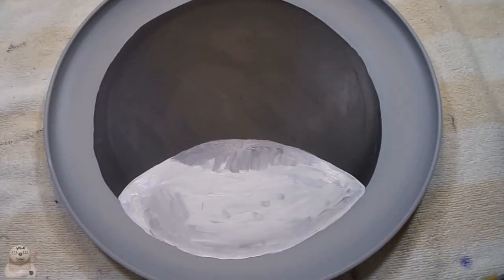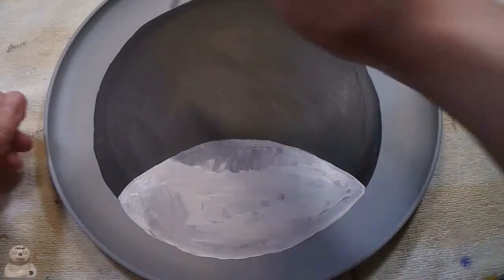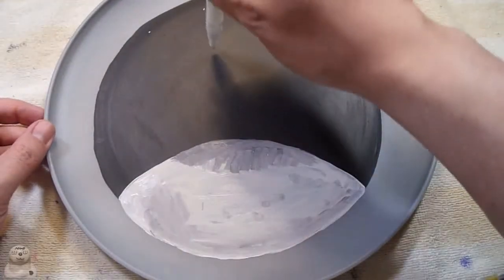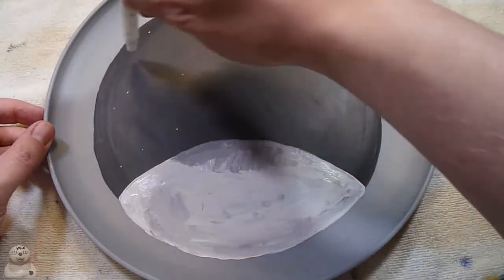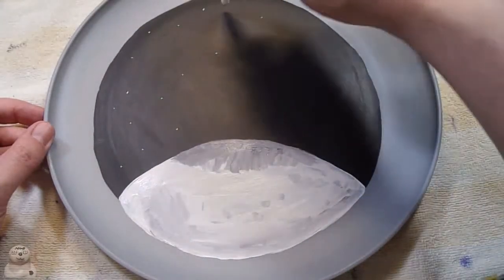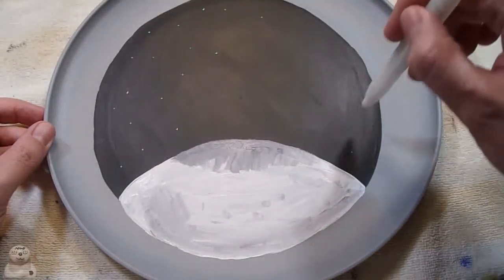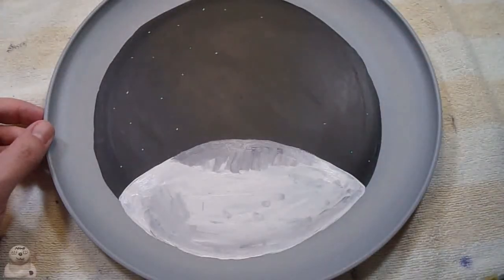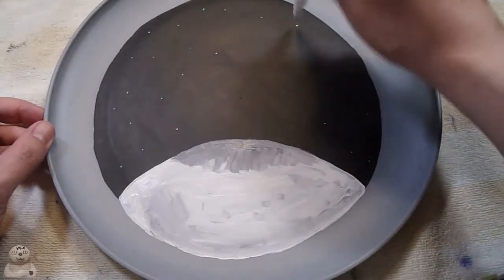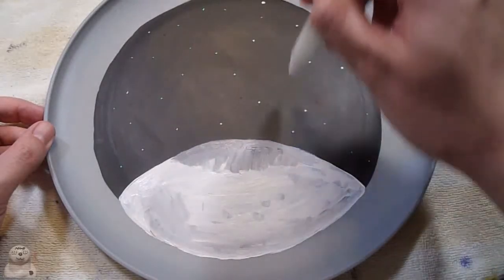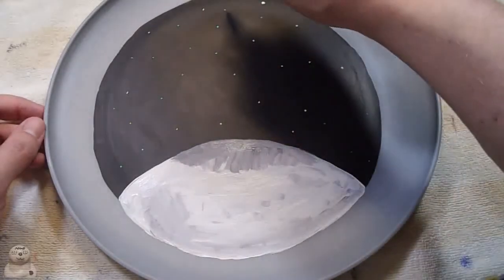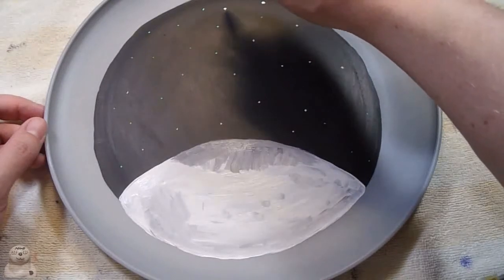Now for the stars. Use my white marker. Just go all over. And if you notice as I go, they get bigger because I have to go over and prime it again. It makes bigger stars. There we go.